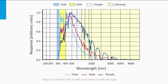On a cloudy day, the spectral composition of light is different from that on a clear day. On a cloudy day, represented by the black line, the relative amount of UV is less and the relative amount of infrared light is higher. This happens because the shorter wavelengths scatter more strongly.